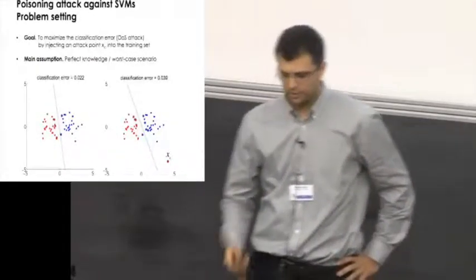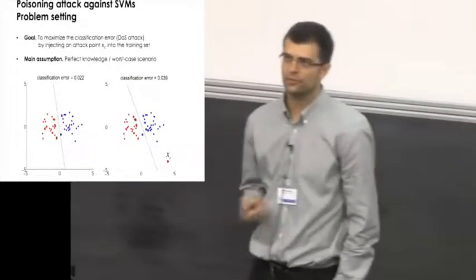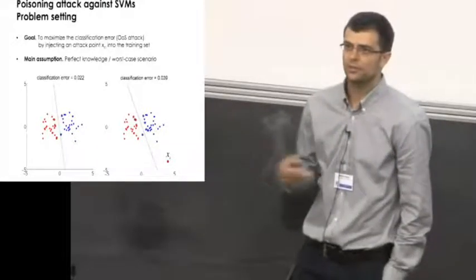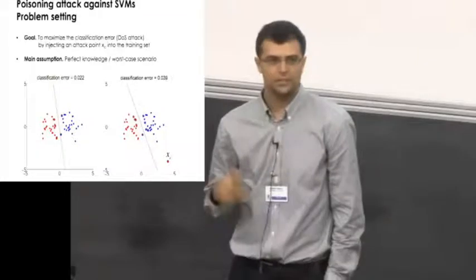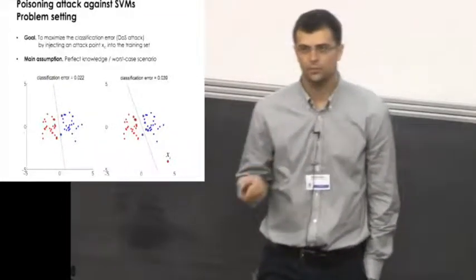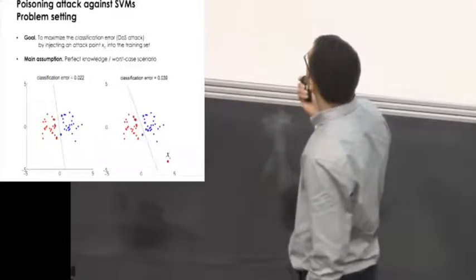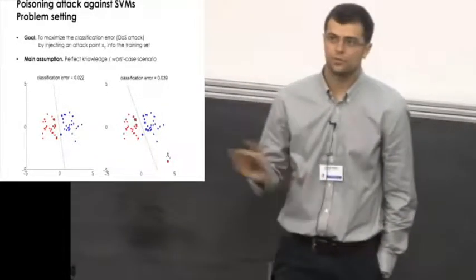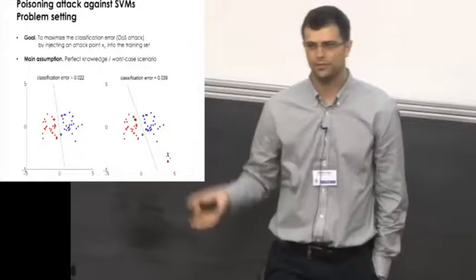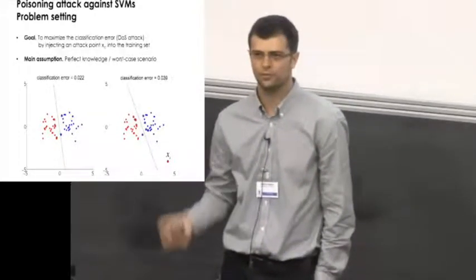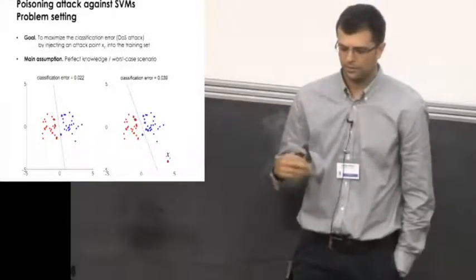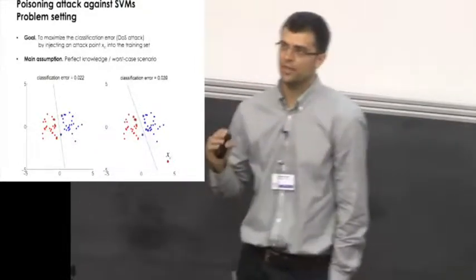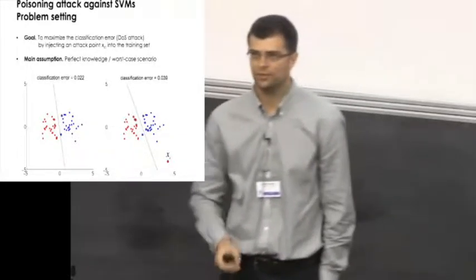In this paper, we investigate this kind of attacks against support vector machines, and the goal of the adversary is to maximize the classification error, to cause this denial-of-service by basically injecting points into the training set. We focus now just on the insertion of a single attack point into training data, under the assumption that the adversary knows pretty much everything about the classifier, so including the training data used to learn the classifier and the decision function whatsoever. Though this may be a strong assumption in many real applications, this gives us an understanding of the worst-case scenario and kind of upper bound on the classification error that one may achieve.